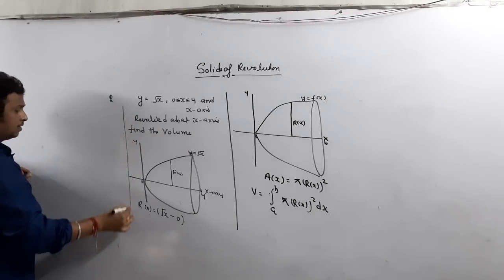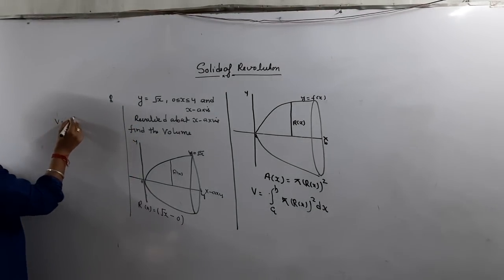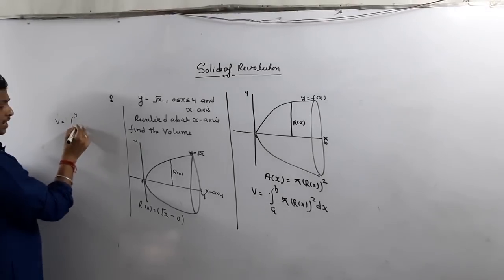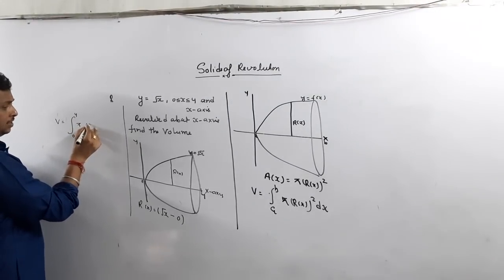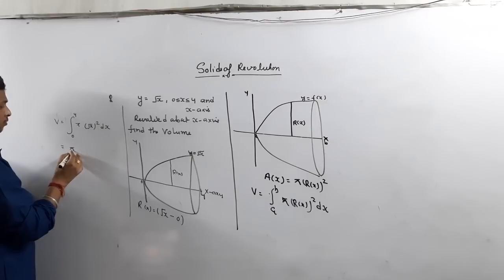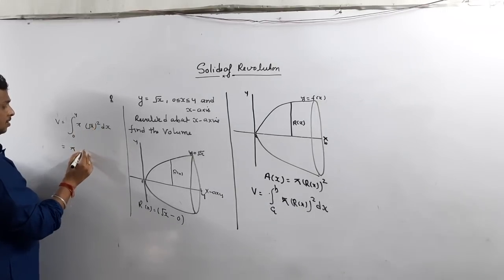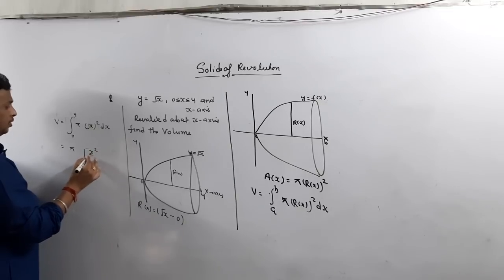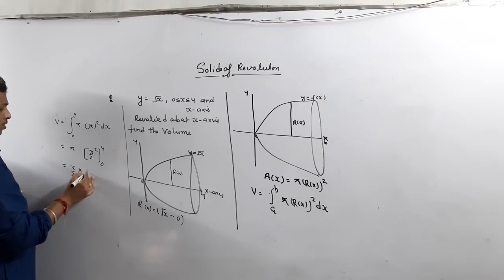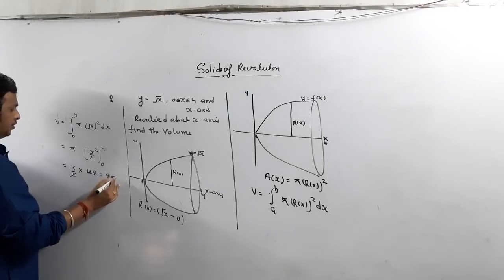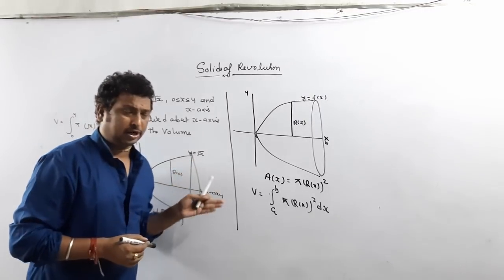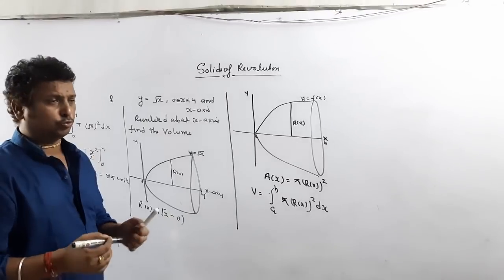Once you know r(x), what is the volume? Volume equals the integral from x = 0 to 4 of π·(√x)²·dx. Root x squared is just x, so we integrate π·x·dx, which gives π · [x²/2] from 0 to 4. That gives π/2 times 16, which equals 8π. So 8π is the volume of this solid. Hope you understand.